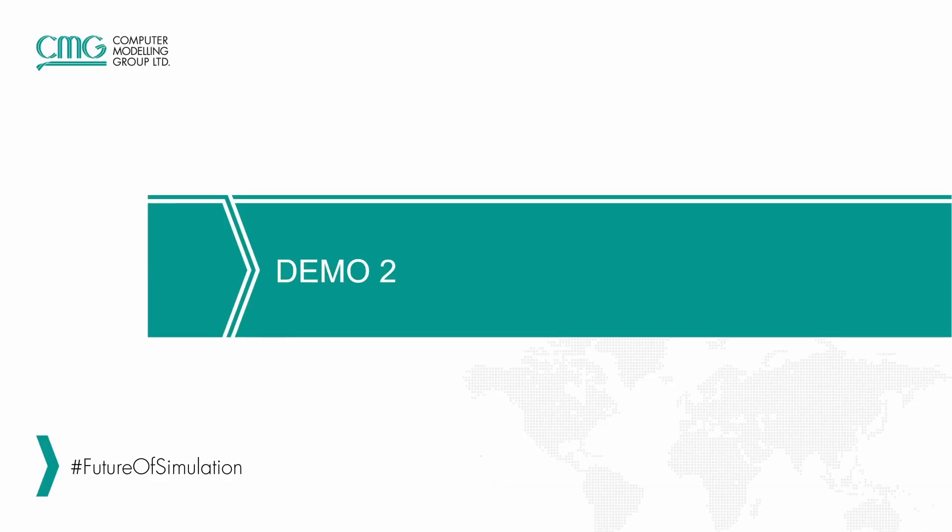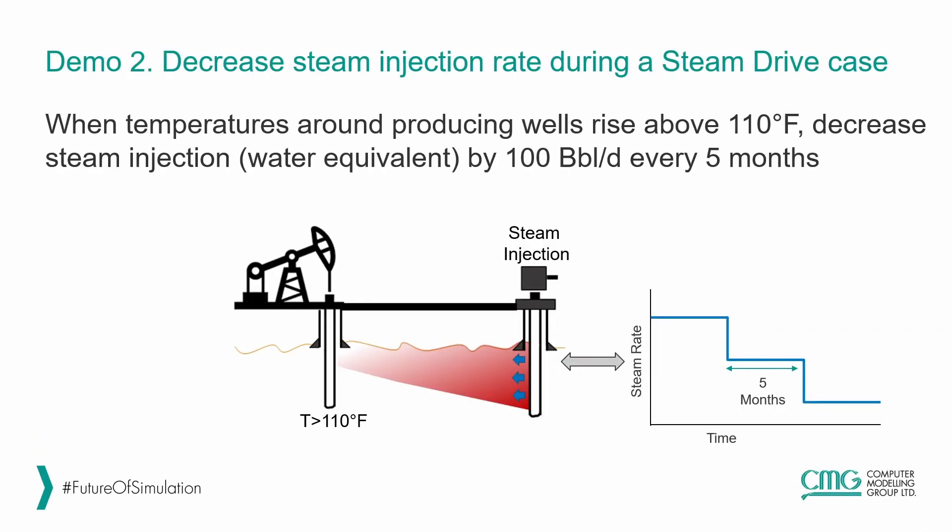Now we can move to a second, more complex demo. This is a steam drive case where we are going to decrease the steam injection rate periodically. When the temperatures around the producing wells rise above 110 Fahrenheit, the trigger is going to decrease the steam injection by 100 barrels per day every five months. Now let's move to Builder and set this trigger.